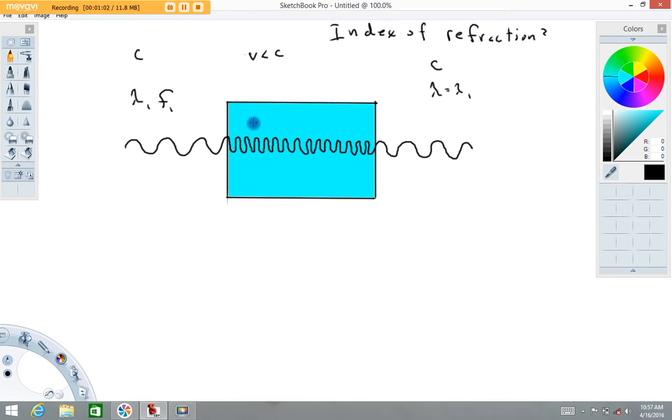However, when light enters a material like this, it slows down. The velocity of light in this material is in fact going to be less than c, the speed of light.